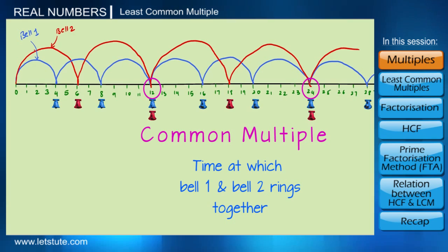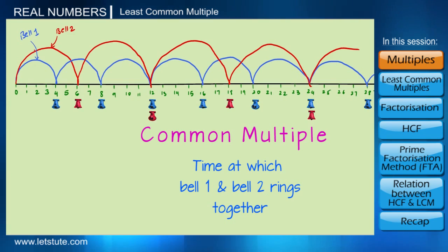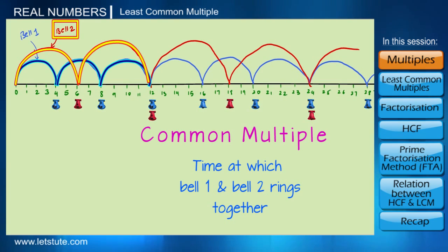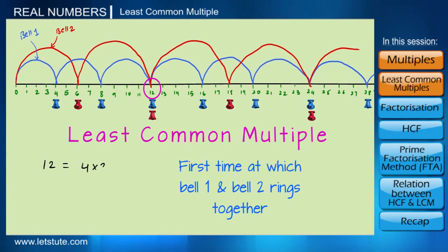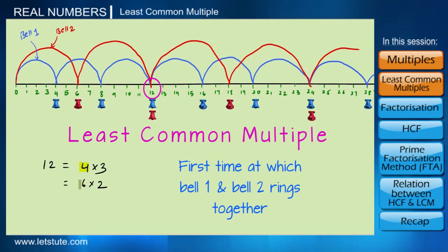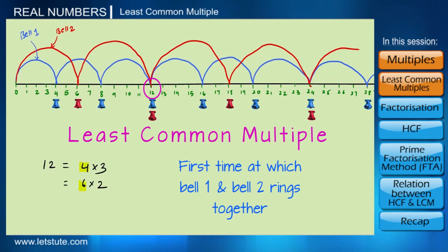The times where they both ring together are called common multiples. The first time they ring together is at the 12th minute — that is the 3rd round for Bell 1 and the 2nd round for Bell 2. So 12 is called the least common multiple of 4 and 6, because 12 is the first number that is a multiple of both 4 and 6.